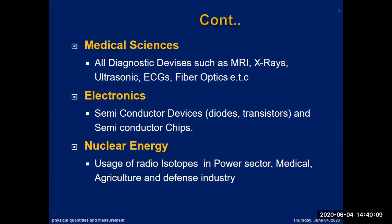Nowadays the main research area in the field of science is basically electronics, and electronics has a complete connection with physics. These are semiconductor devices — diodes, transistors, semiconductors. At an early stage, buildings were needed to house a single computer, but nowadays you can put a computer in your pocket easily.